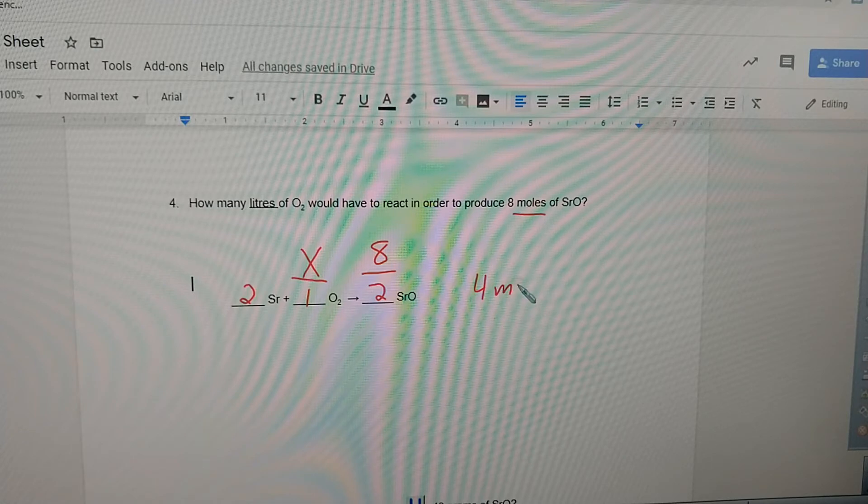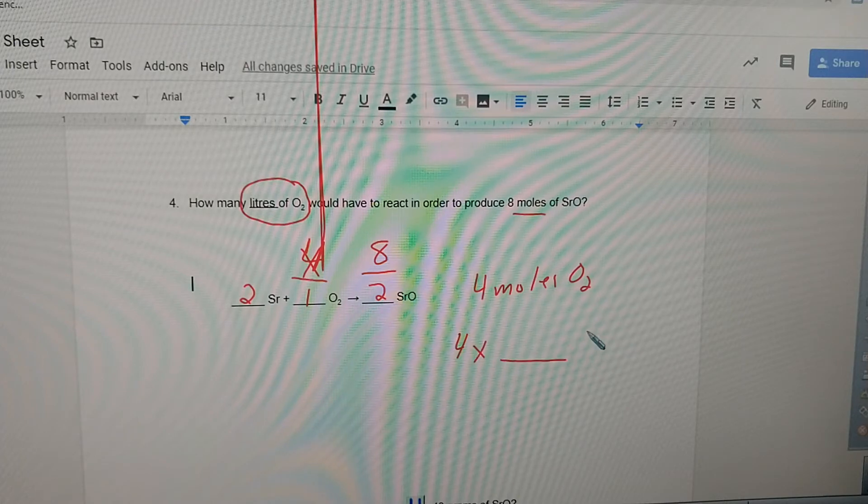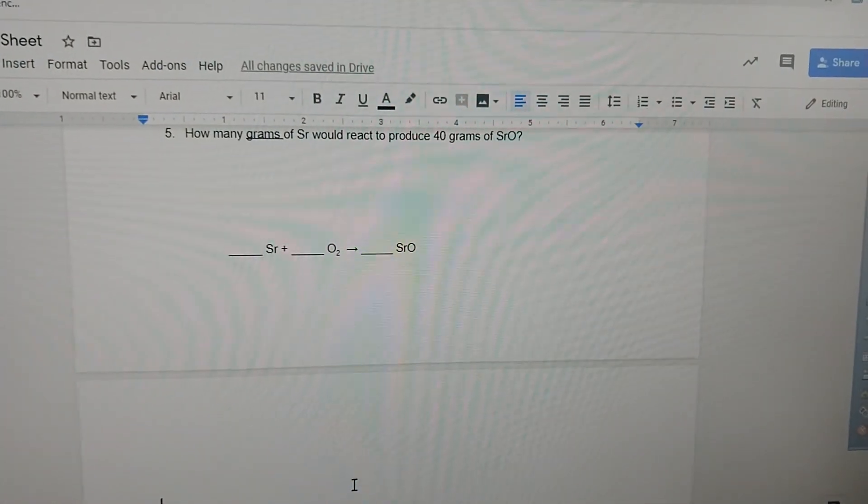But what was the question? How many liters of oxygen? Four times, that's right, 22.4 liters. Four times 22.4 equals 89.6 liters. That's it, almost done. Last one, number five.